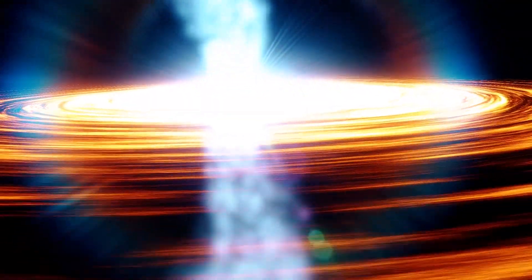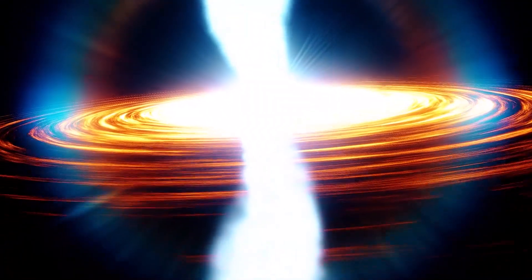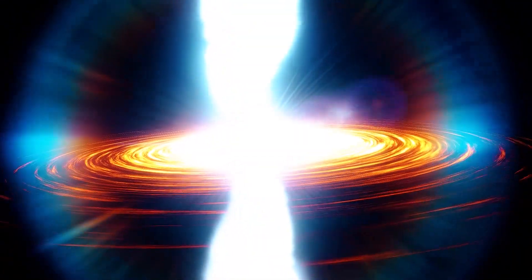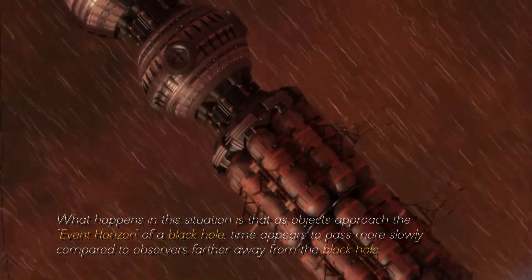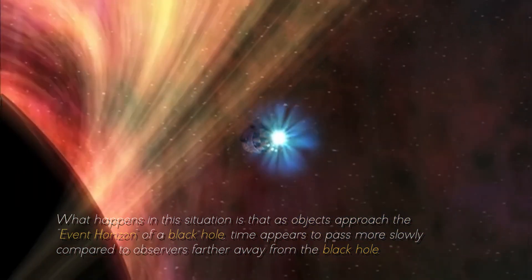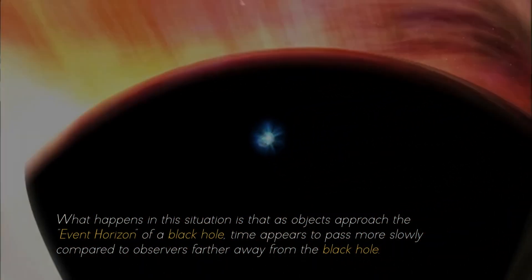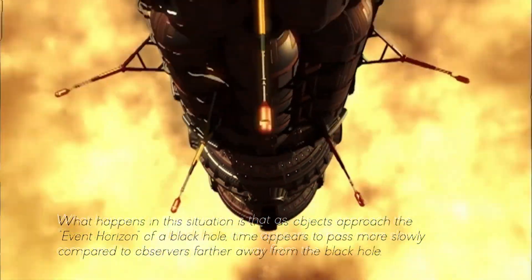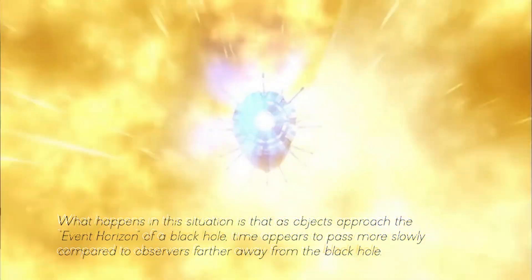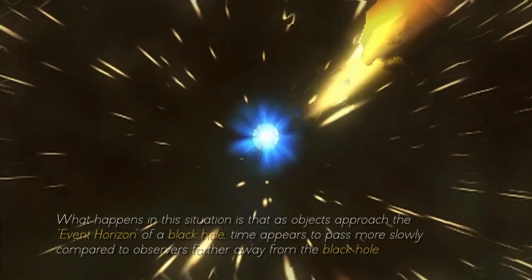But most surprising of all, the extreme gravitational attraction near a black hole gives rise to a phenomenon known as time dilation. What happens in this situation is that, as objects approach the event horizon of a black hole, time appears to pass more slowly, compared to observers farther away from the black hole.